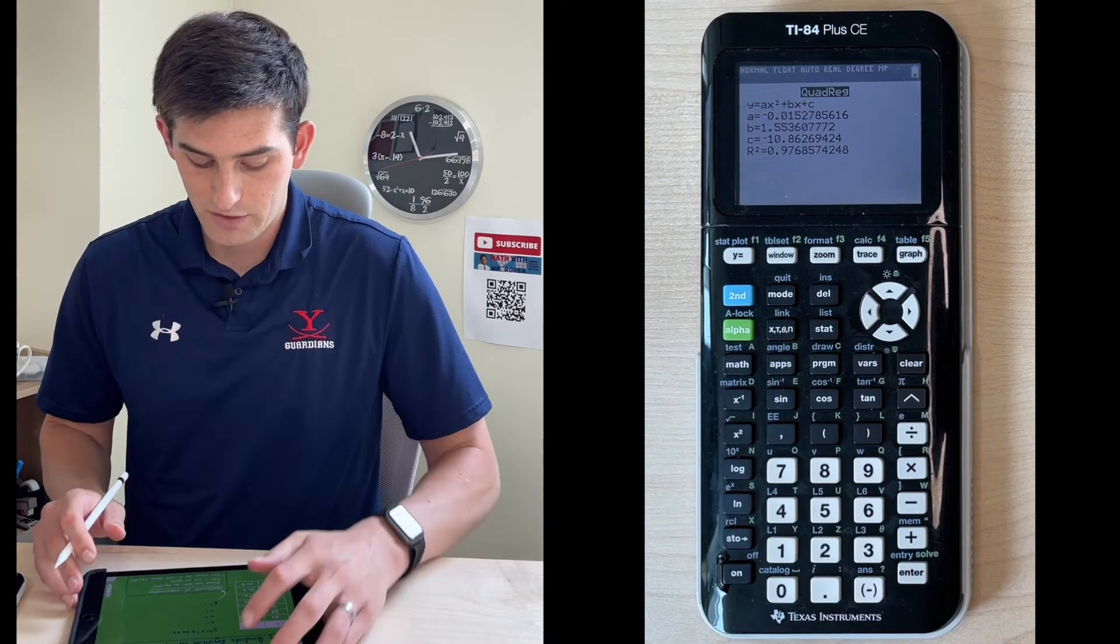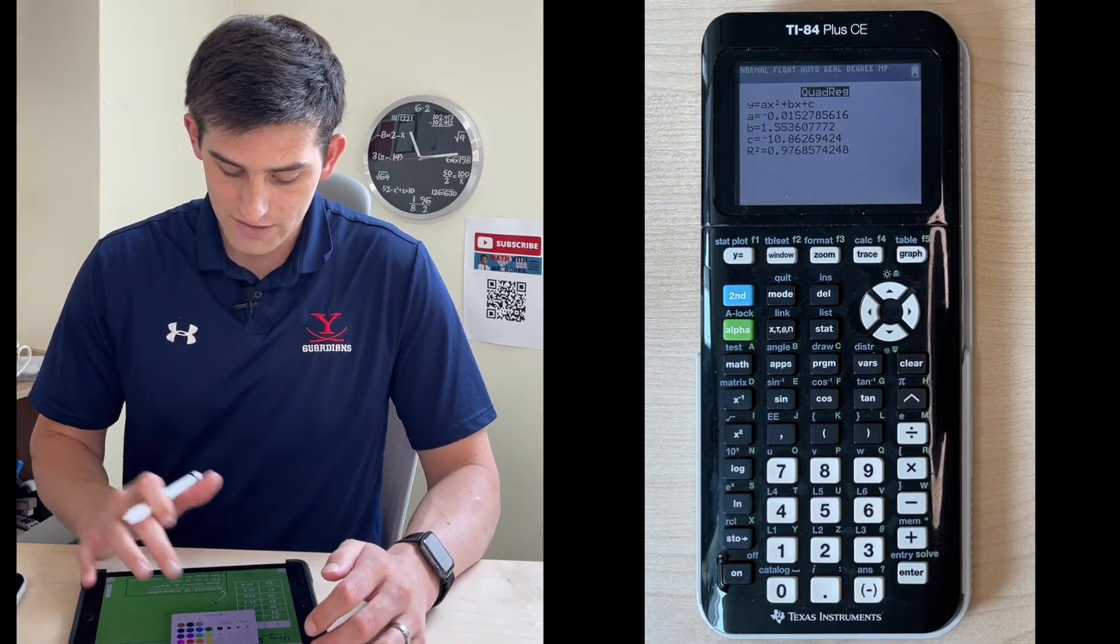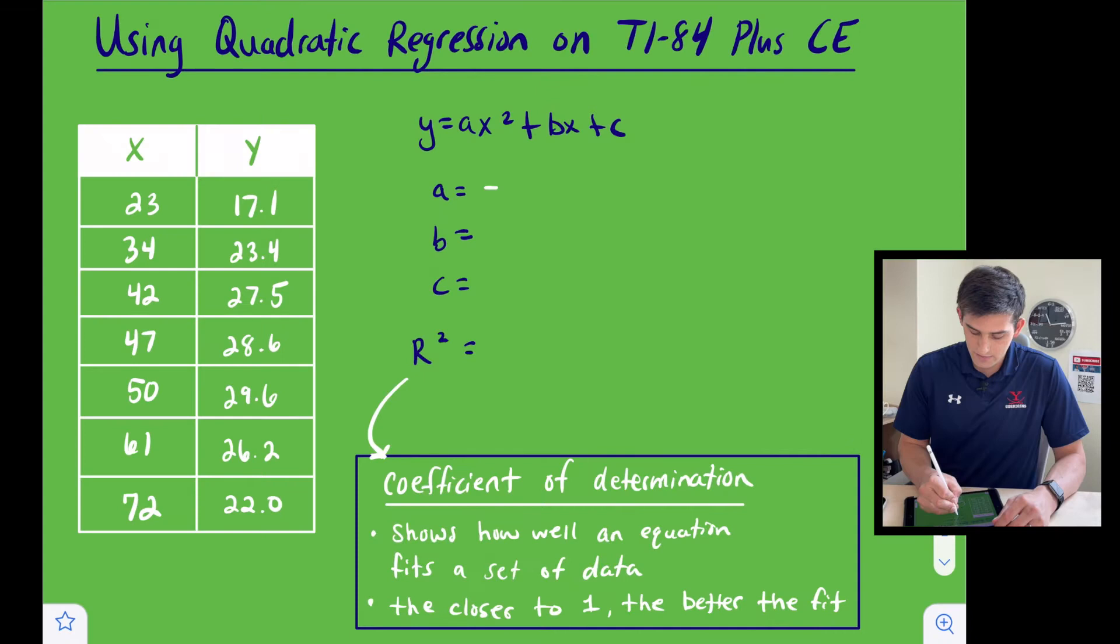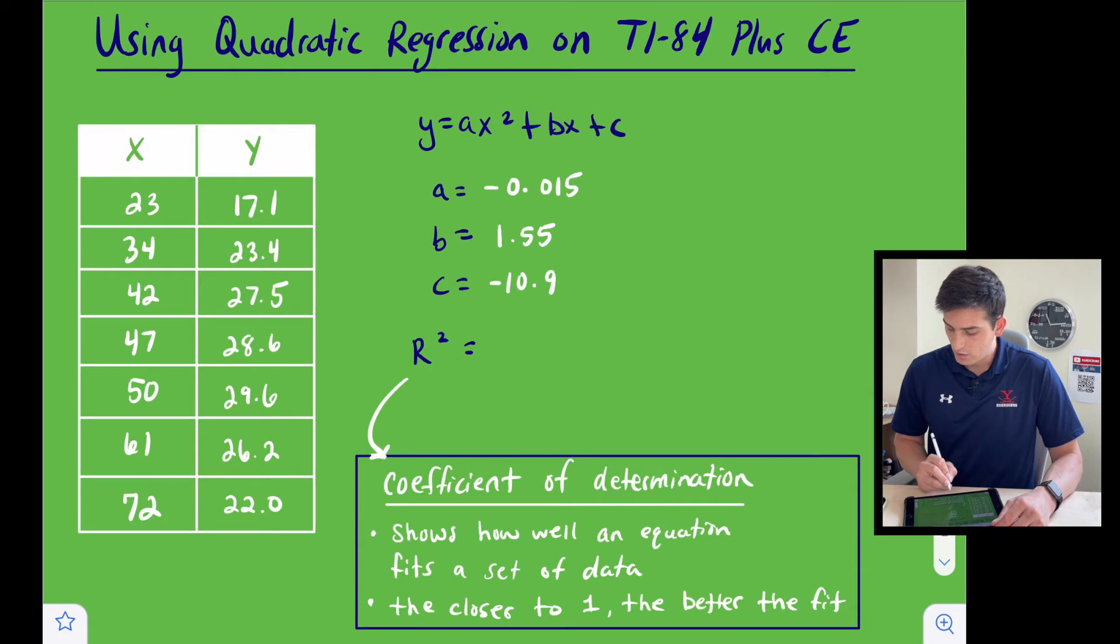Now we can fill out some of our information. We have our a value: negative 0.015. For our b value, we have 1.55. C, let's round this to negative 10.9, and our coefficient of determination, let's round this to 0.98.